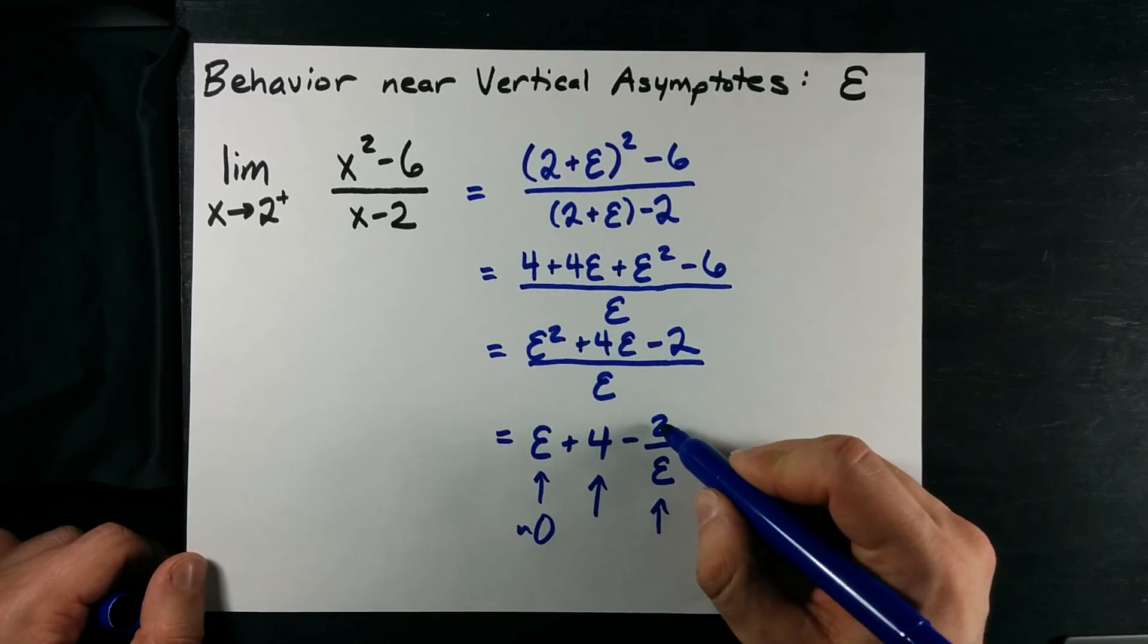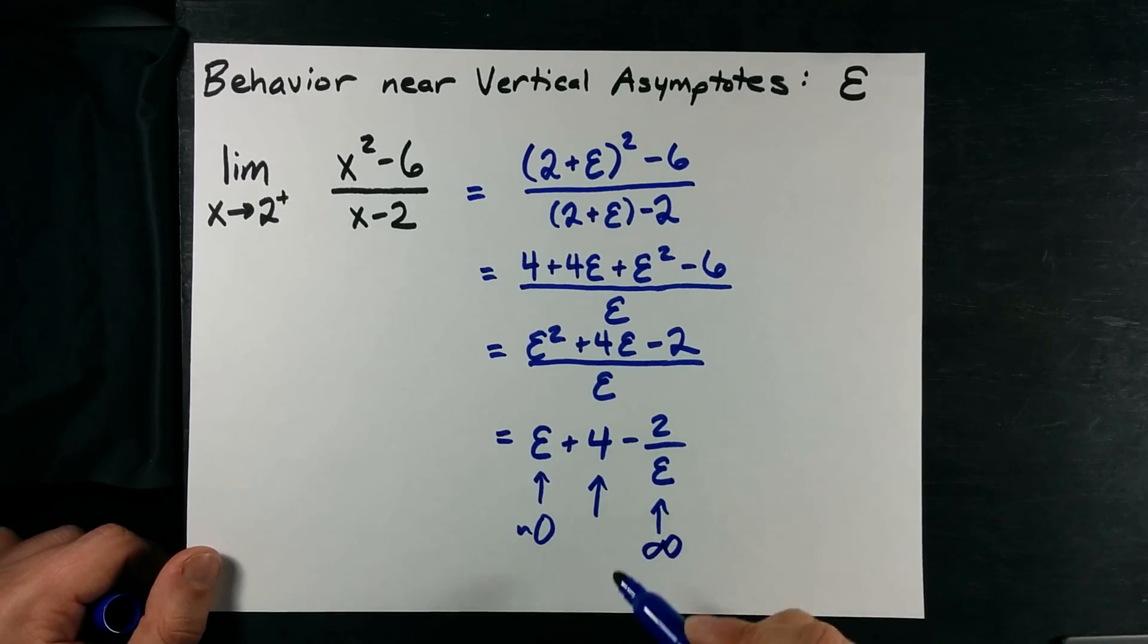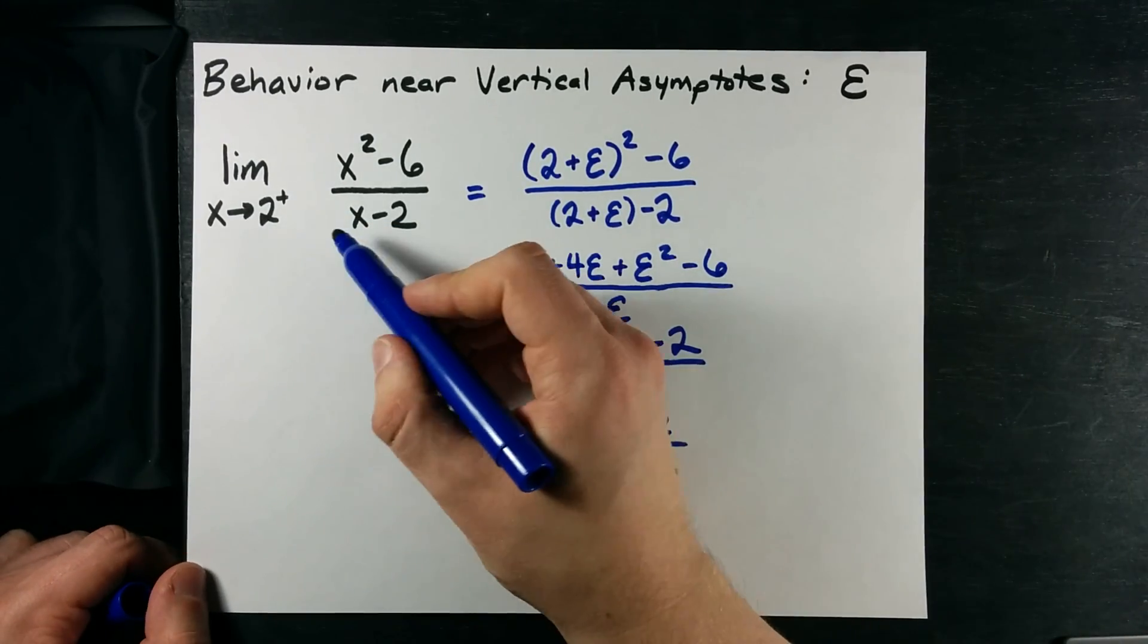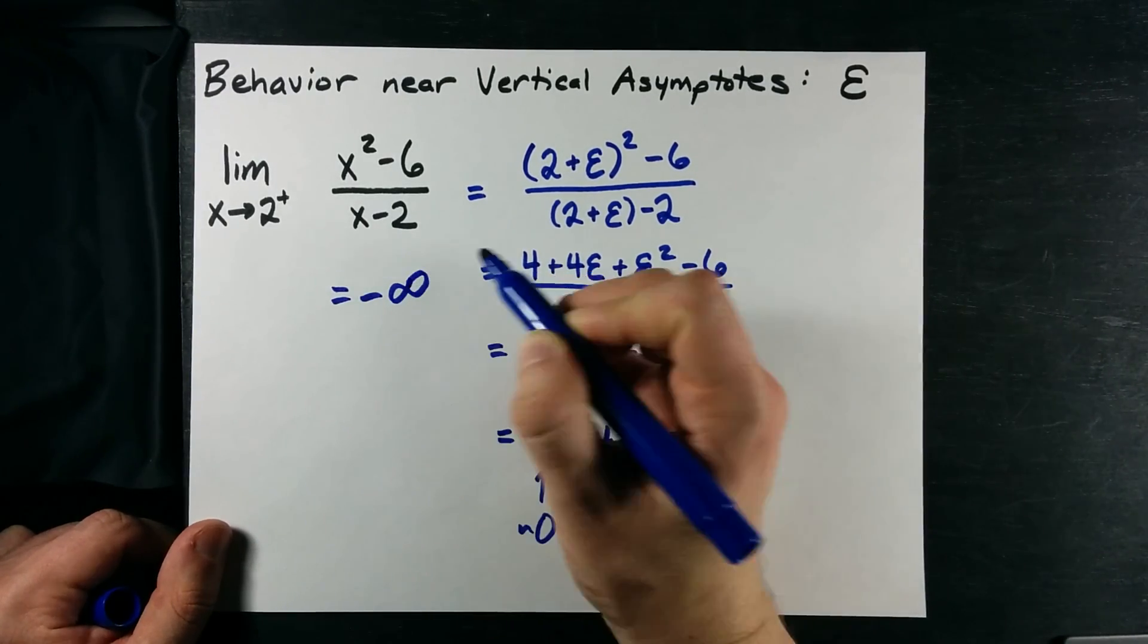Now, 2 divided by a really tiny number will become infinity. And because I'm subtracting it, it's going to be a negative infinity. Thus, the limit as we approach 2 from the right is negative infinity here.